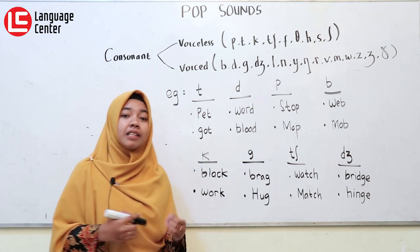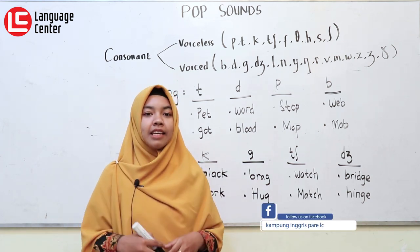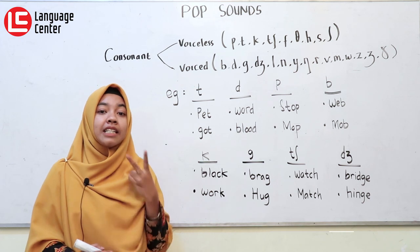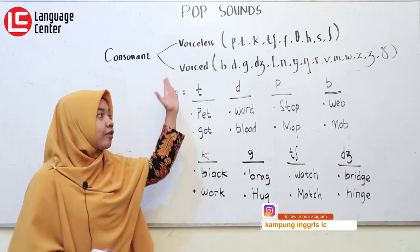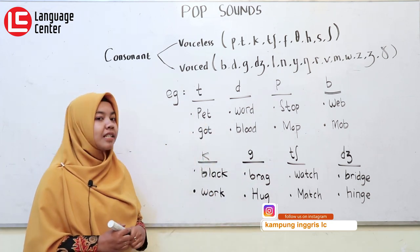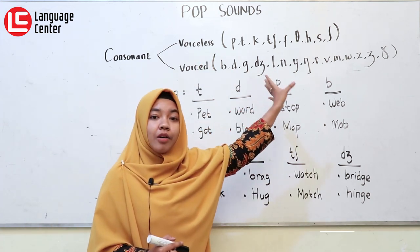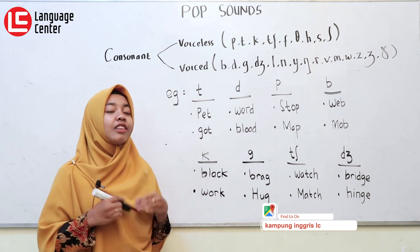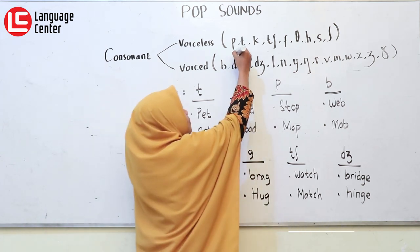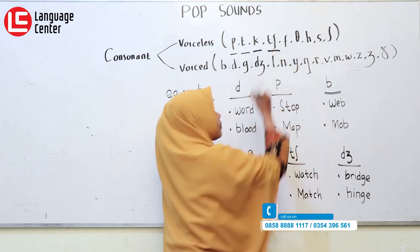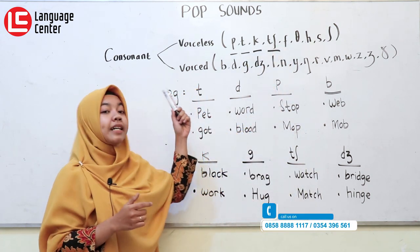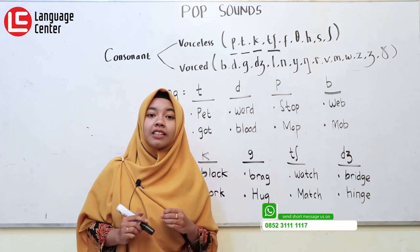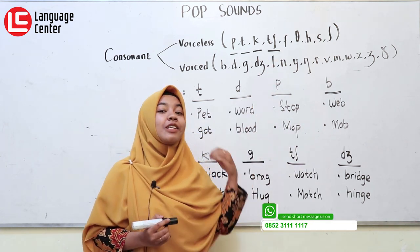Suara-suara apa saja yang bisa kita berikan pop sound di akhir katanya? Yang pertama, tentang consonant. Consonant dibagi menjadi dua berdasarkan bunyi, yaitu ada voiceless dan juga voiced. Yang pertama, voiceless — tidak semua suara di voiceless sounds ini bisa kita berikan pop sound. Yang bisa kita berikan letupan di akhir kata yaitu ada suara P, T, K, dan CH. Hanya empat suara itu di dalam voiceless, dan kita tidak perlu memberikan pop sound di suara-suara lain.